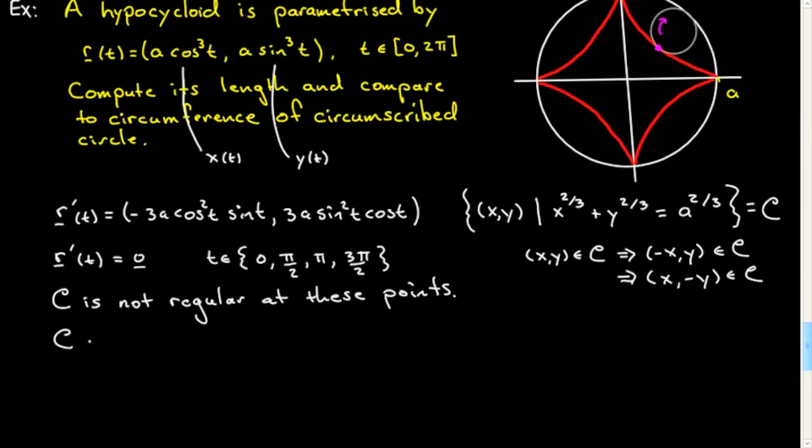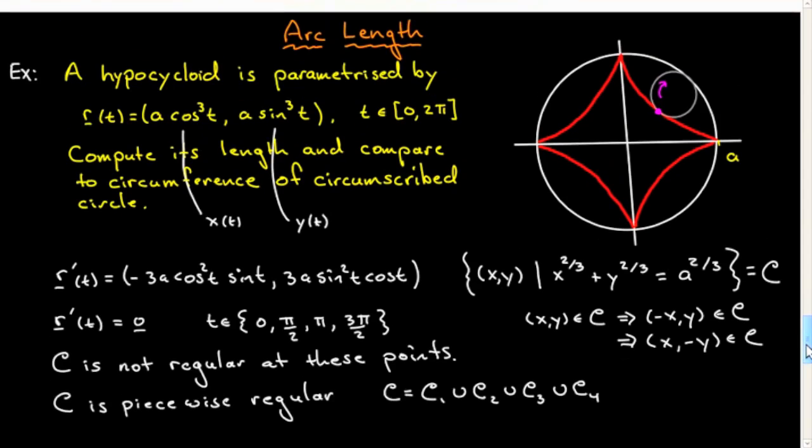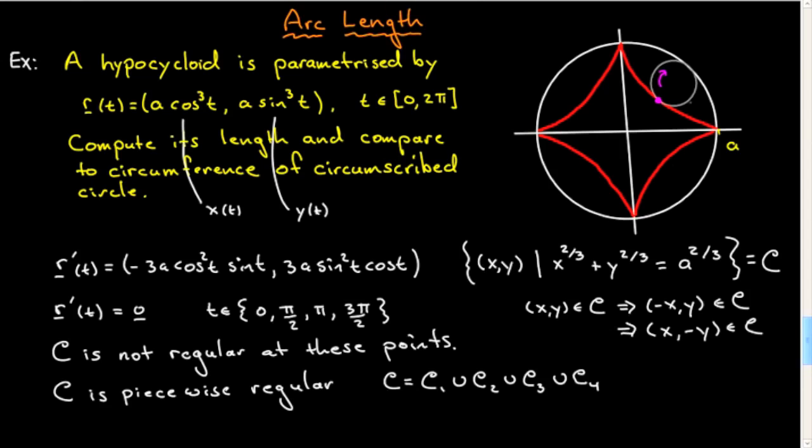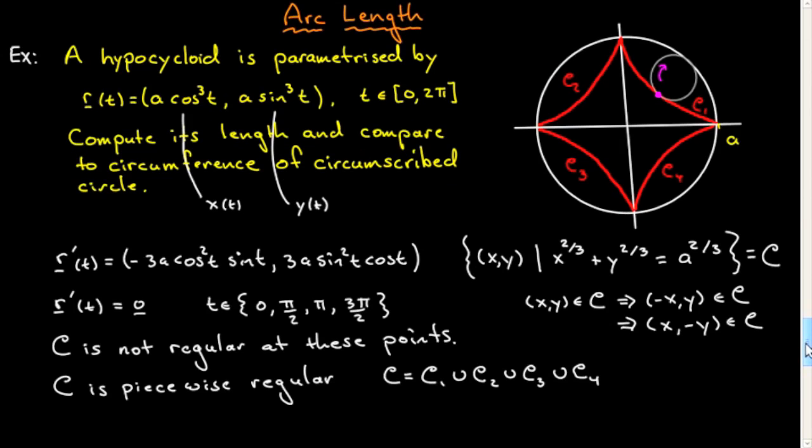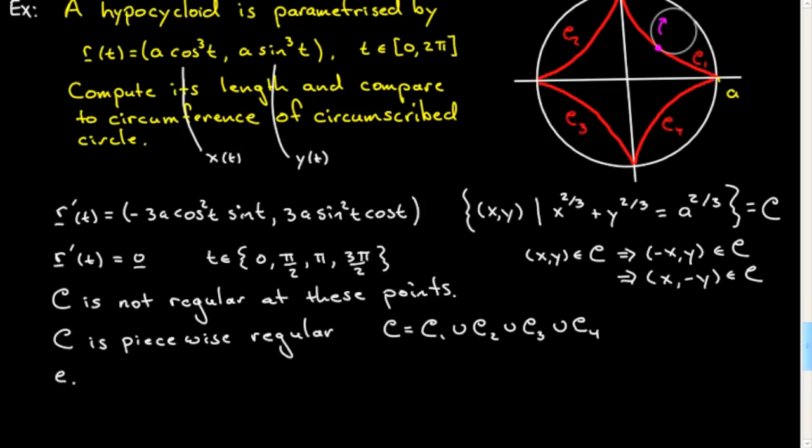What we have is that C is not regular at these points. However, C is piecewise regular. C is equal to the union of C1 ∪ C2 ∪ C3 ∪ C4, which have the obvious meanings. This will be C1, C2, C3, C4, and each of those is regular. Let's look at C1, for example, which will correspond to the part of the curve where t is in [0, π/2], and it's between these two points where the curve ceases to be regular.